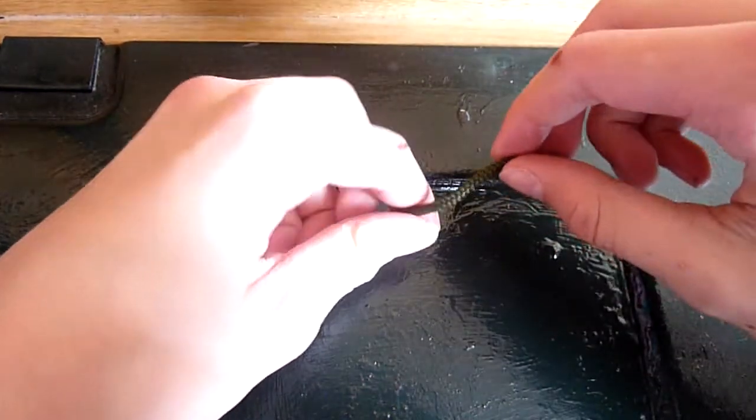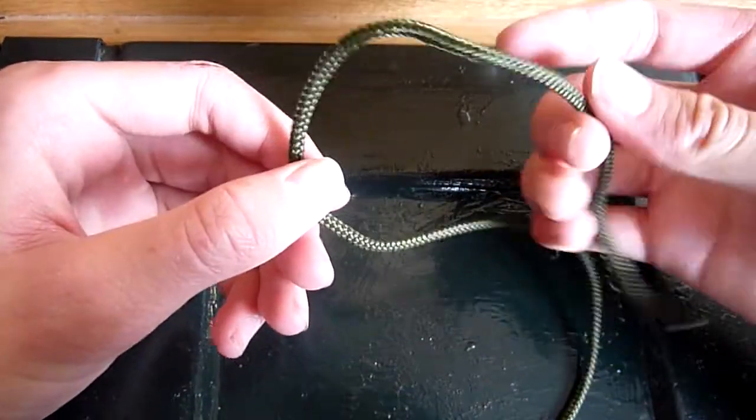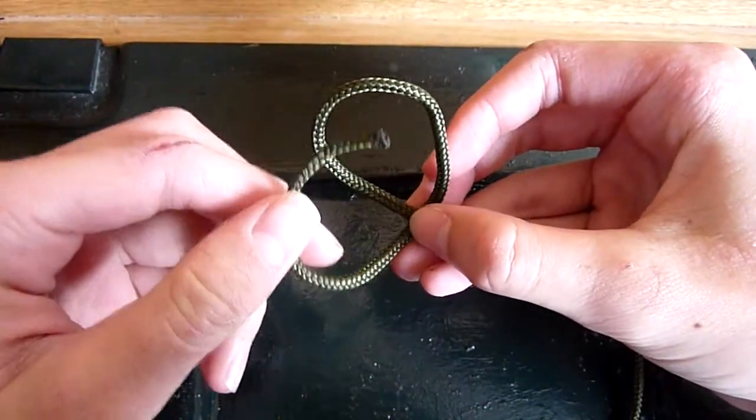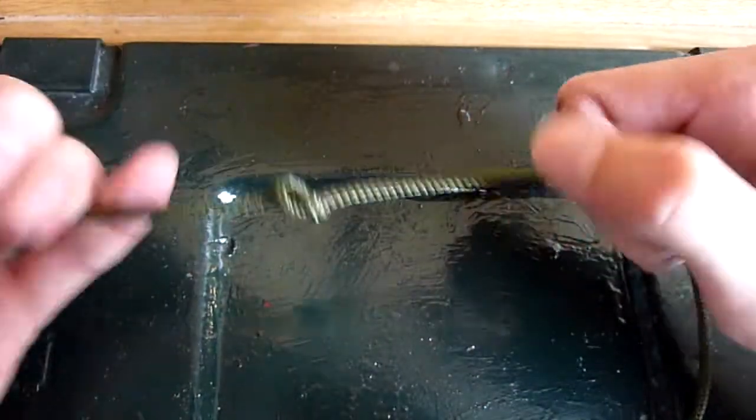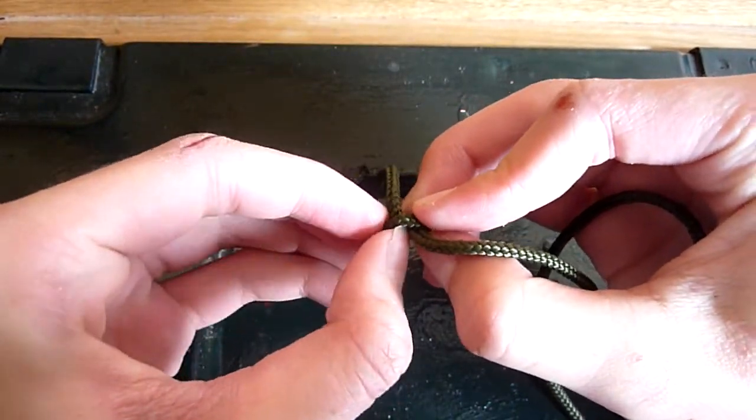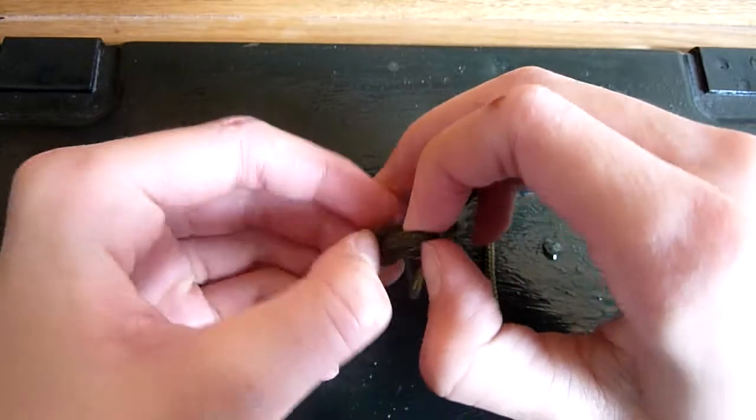So the simplest knot is, this is just a bit of paracord, you can make a loop, just simply get the other end, put it through. It's a nice knot, quick and easy, I don't know the name of it, it's just a knot, used pretty much everywhere.